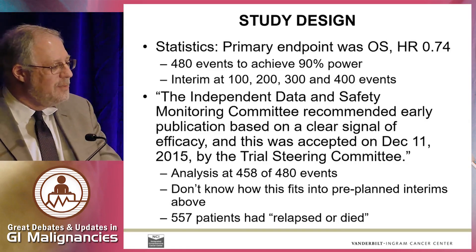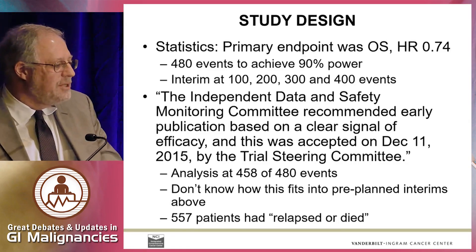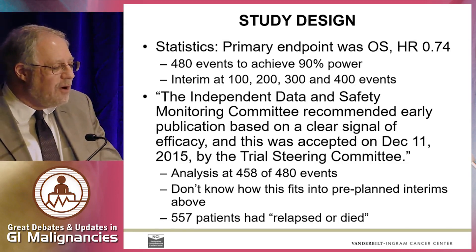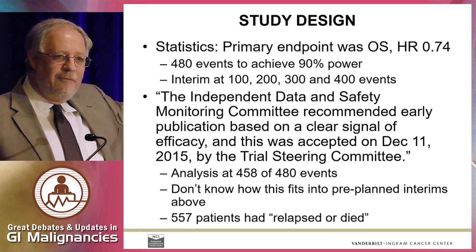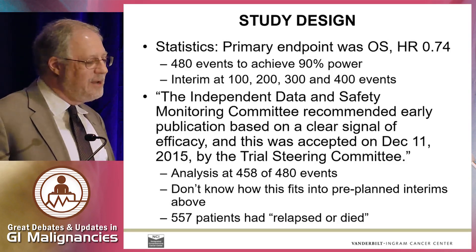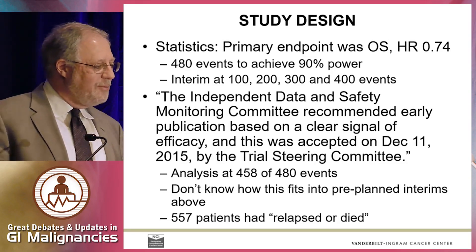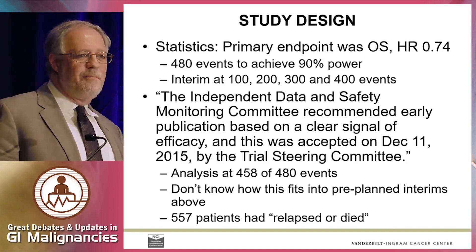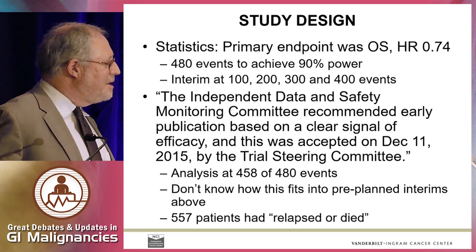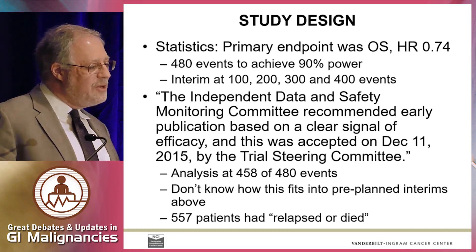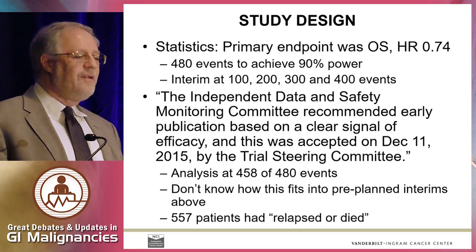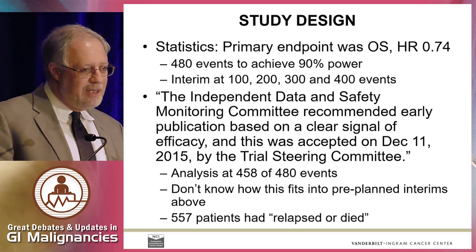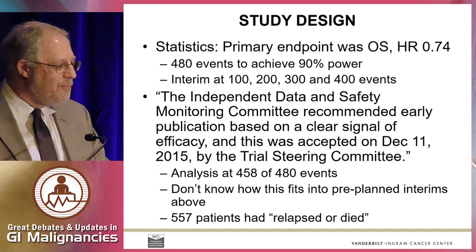The Independent Data and Safety Monitoring Committee recommended early publication based on a clear signal of efficacy, and immediately 458 — maybe 58 more events happened after they did their analysis, before they reported. So it's quite possible this is exactly what they planned. They kind of obfuscate the numbers a little bit in their paper by talking about the number of patients who had relapsed or died, but the events they want are the 458 deaths — not the relapsed or died — because death is the primary endpoint, or survival is the primary endpoint of the study.